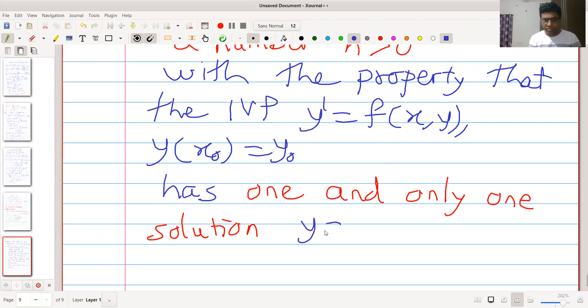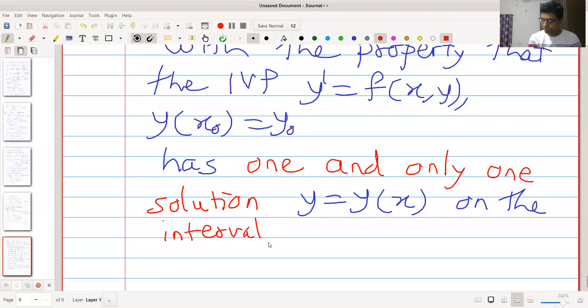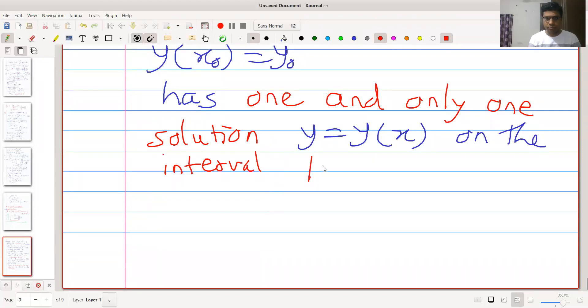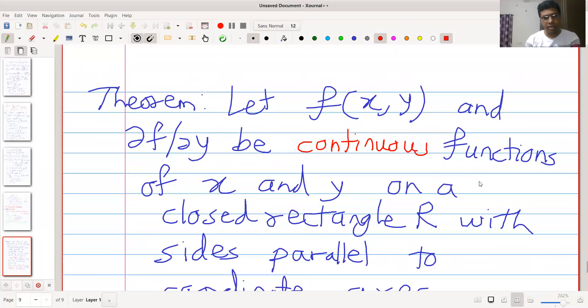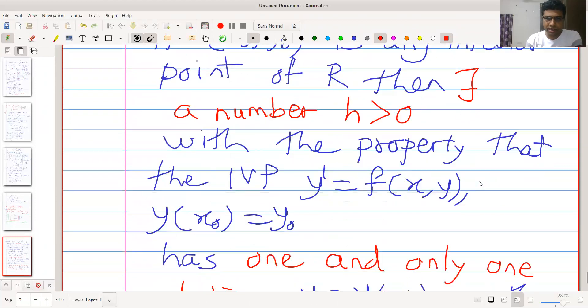y = y(x) on the interval |x - x₀| ≤ h. So what this means: if we consider initial value problem y' = f(x,y) and initial value y(x₀) = y₀,